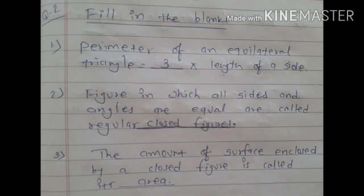Second, figure in which all sides and angles are equal are called regular closed figure. Okay, aisa figure jiski sab side and angle equal hai usko hum kya kahte hain? Usko hai closed figure.